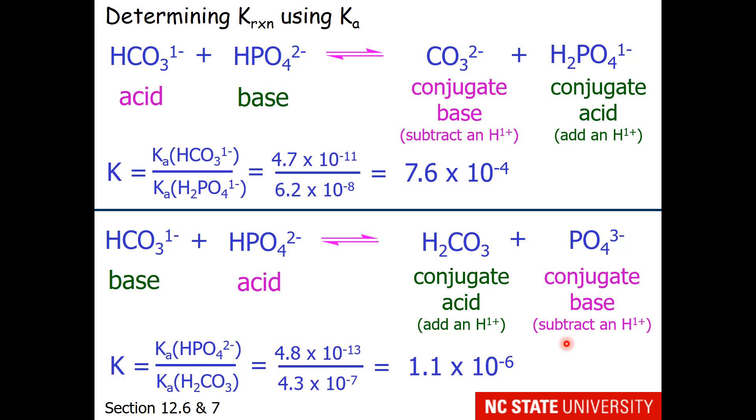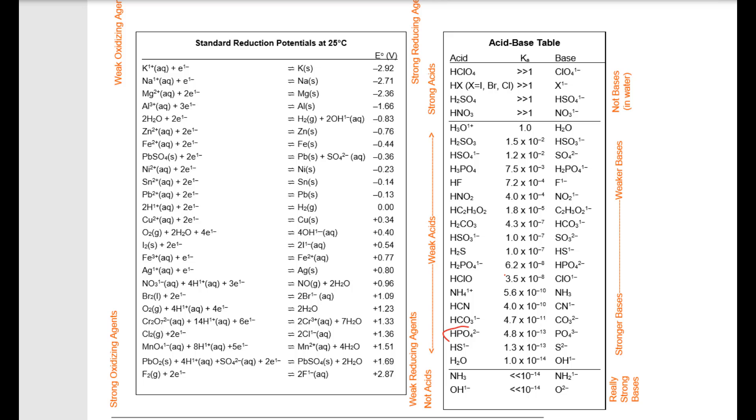Let's go find those on the table. Hydrogen phosphate lives two places on this table. Put on your right eye blinder and just use this value next to the hydrogen phosphate of 4.8 times 10 to the minus 13. Carbonic acid is in only one position and the value we'll use is 4.3 times 10 to the minus 7.